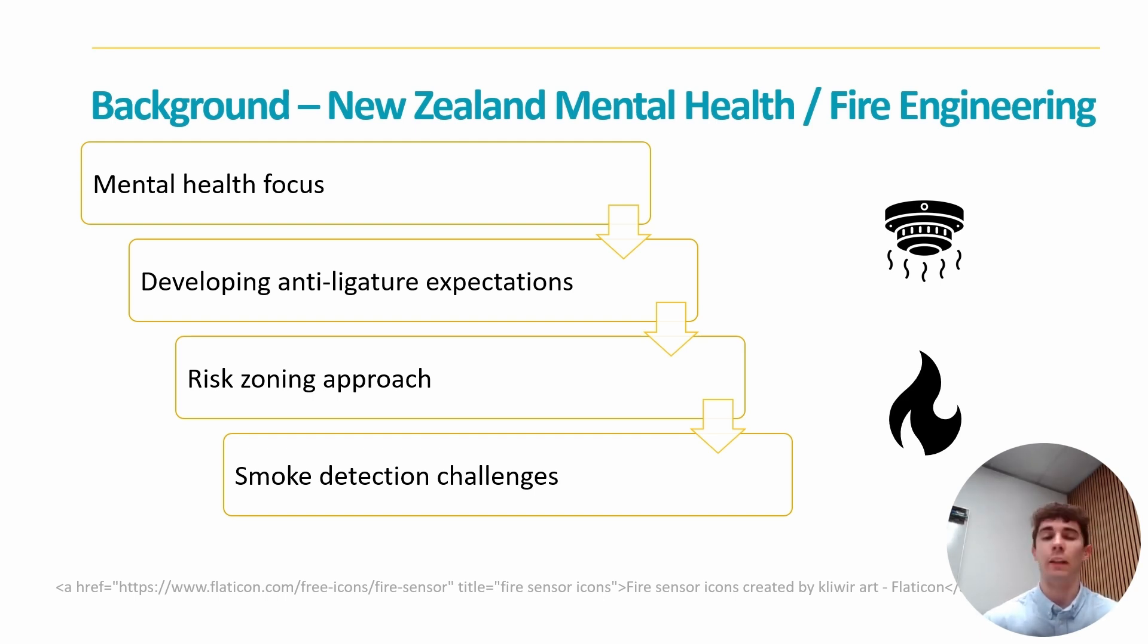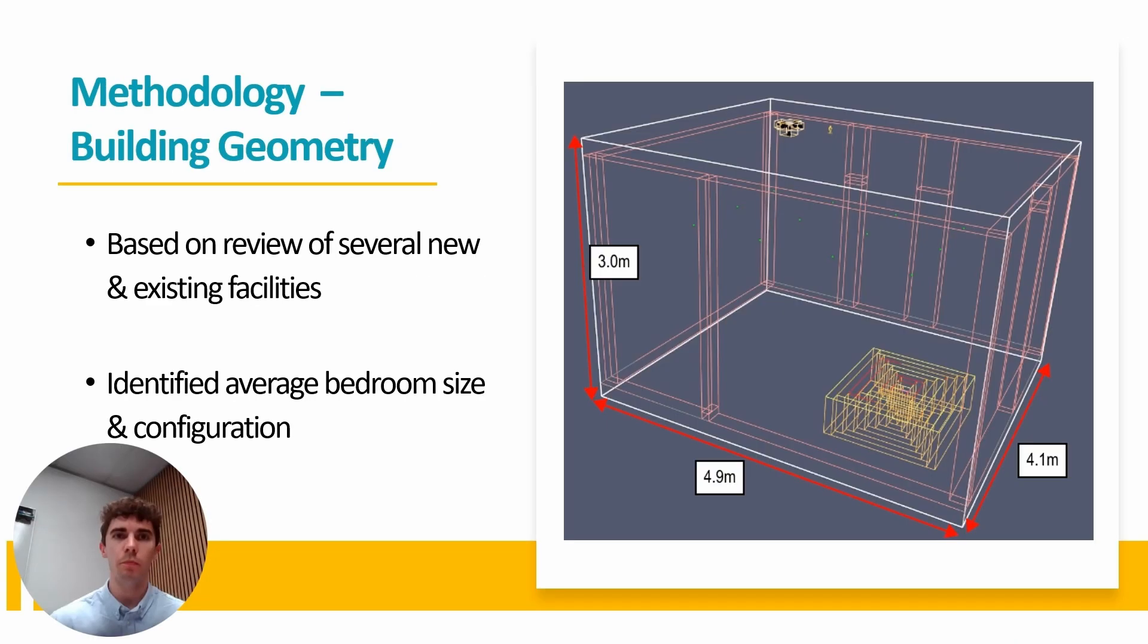And that kind of created the base for this investigation, which was to see if we could quantify the impact of a cover on detector performance using modeling. So based on that risk zone approach I mentioned, smoke detector covers are typically only provided in those high risk zones like bedrooms, and therefore we restricted the assessment of the model to a given bedroom. The layout for this was produced by reviewing several existing and new facilities and taking an average on their size, which then formed this FDS geometry that you can see in the figure.